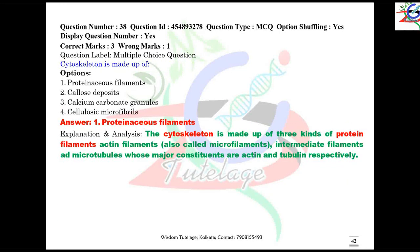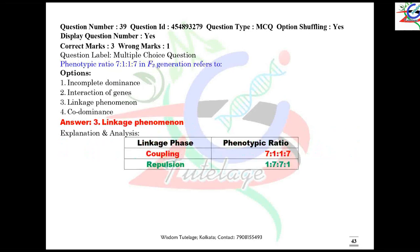Question number 38: the cytoskeleton is made up of proteinaceous filament. Question number 39: the phenotypic ratio 7:1:1:7 in F2 generation refers to the coupling linkage phenomenon. In case of repulsion linkage, the ratio is the opposite — 1:7:7:1.